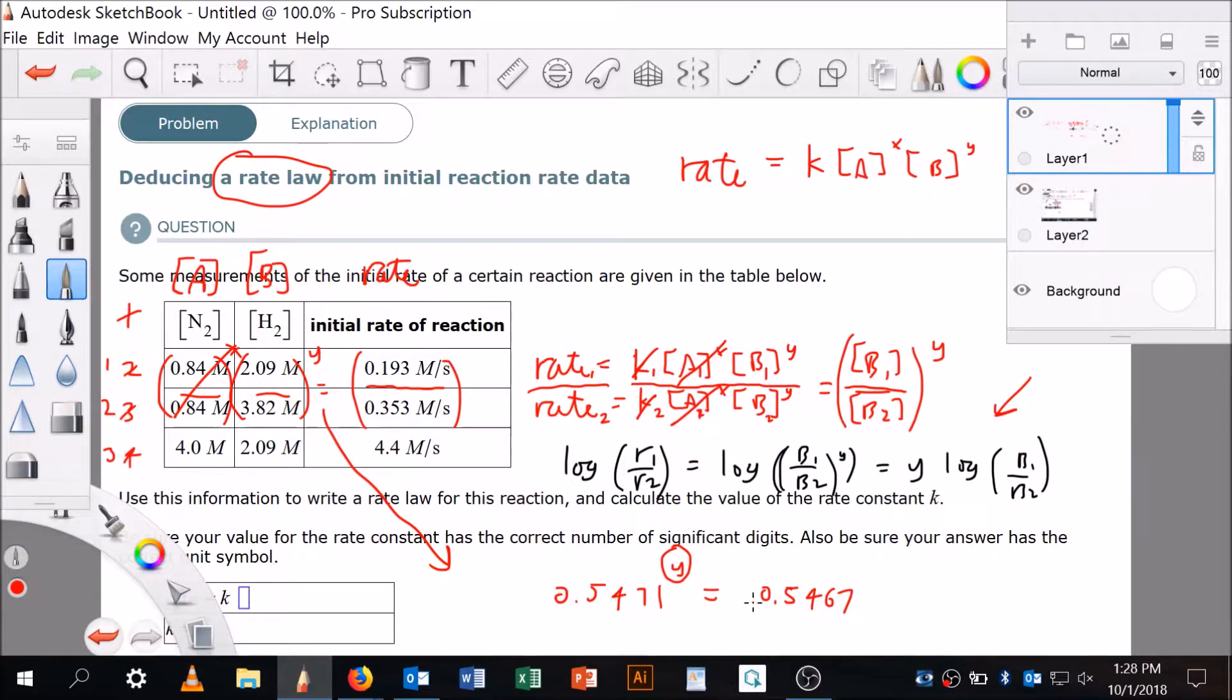I could do this with logarithms like I showed you. However, I can see these are the same number, so clearly Y equals 1. Obviously they're not exact, but they lie within the limits of precision based on the measurements we took. Therefore, Y equals 1, so this is first order with respect to B.